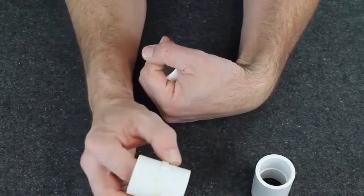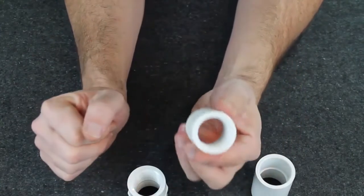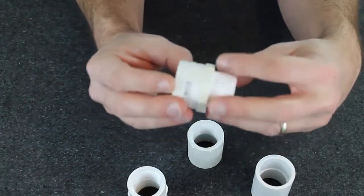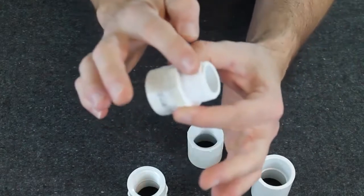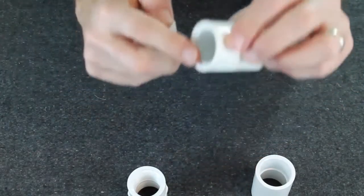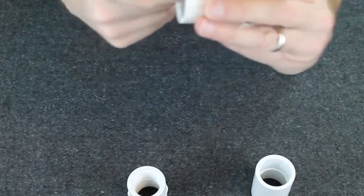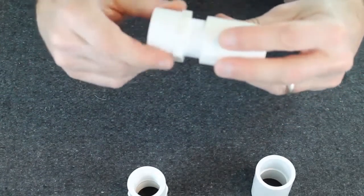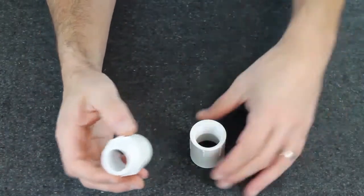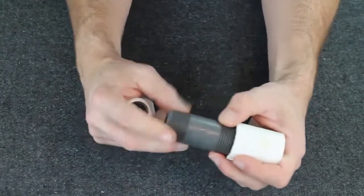If it is half threads and half slip, it's called a female adapter, and we have the converse of that, the male adapter, which gives you a slip-by-thread. Obviously this is male in reference to the male anatomy, and the same with the female here. This is a male adapter, and this is a female adapter. Female adapter is slip on one side, thread on the other, so that they can fit together there.